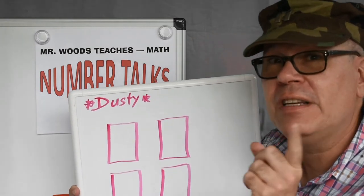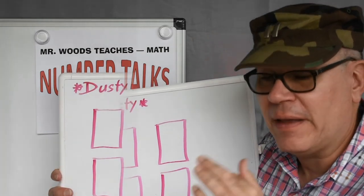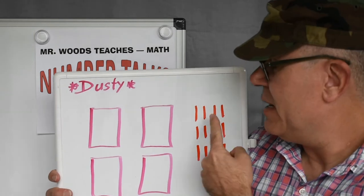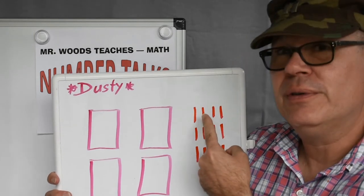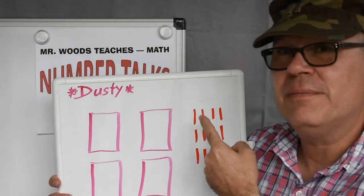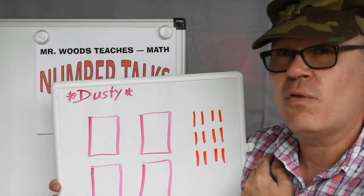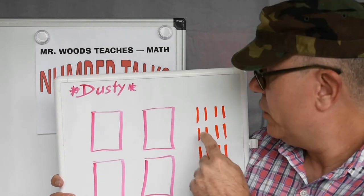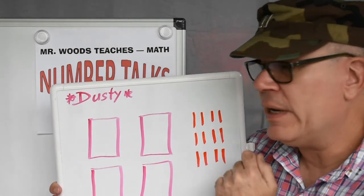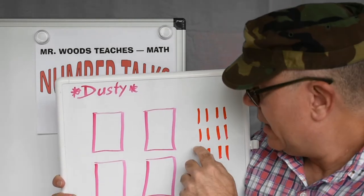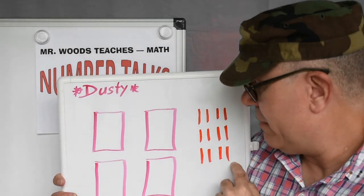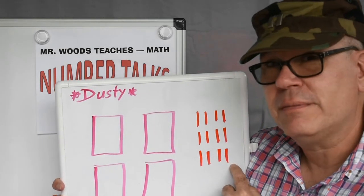Hmm, let's see what we can do about that. See what I did here? I drew these lines to make it so it had 12. So I have 1, 2, 3, 4 here. And I have another 4 that makes 8, and another 4 that makes 12.